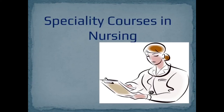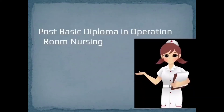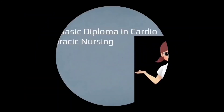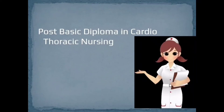Apart from these levels of nursing, there are also specialty courses in nursing. Other than undergraduate and postgraduate programs, there are numerous PG diploma and certification courses available. These help to take on different specialty roles. Some well-known areas of specialization are: Post Basic Diploma in Operation Room Nursing — a one-year course provided by the State Nursing Council or University — and Post Basic Diploma in Cardiothoracic Nursing, also a one-year course.